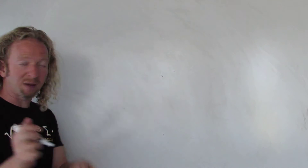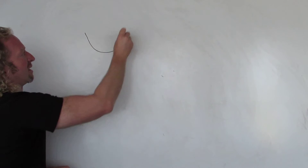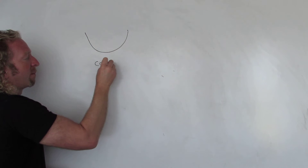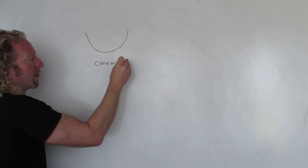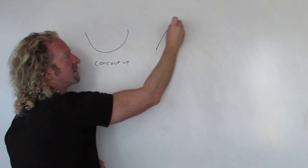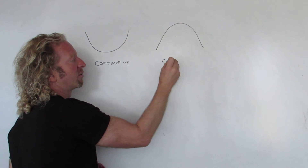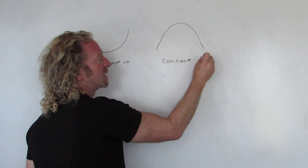So what does it mean for a function to be concave up? If it looks like this, we say it's concave up. And if it looks like this, we say it's concave down.